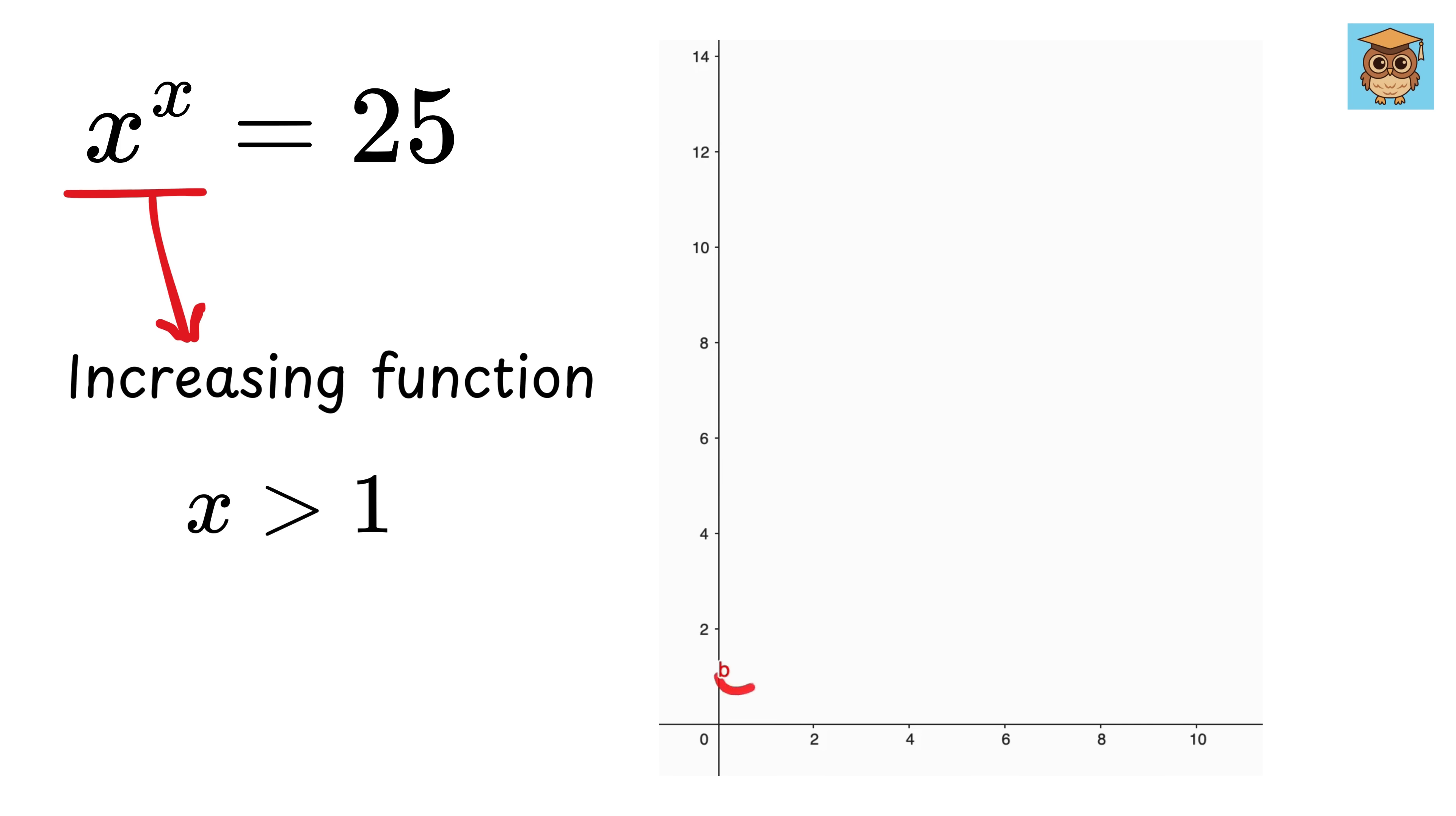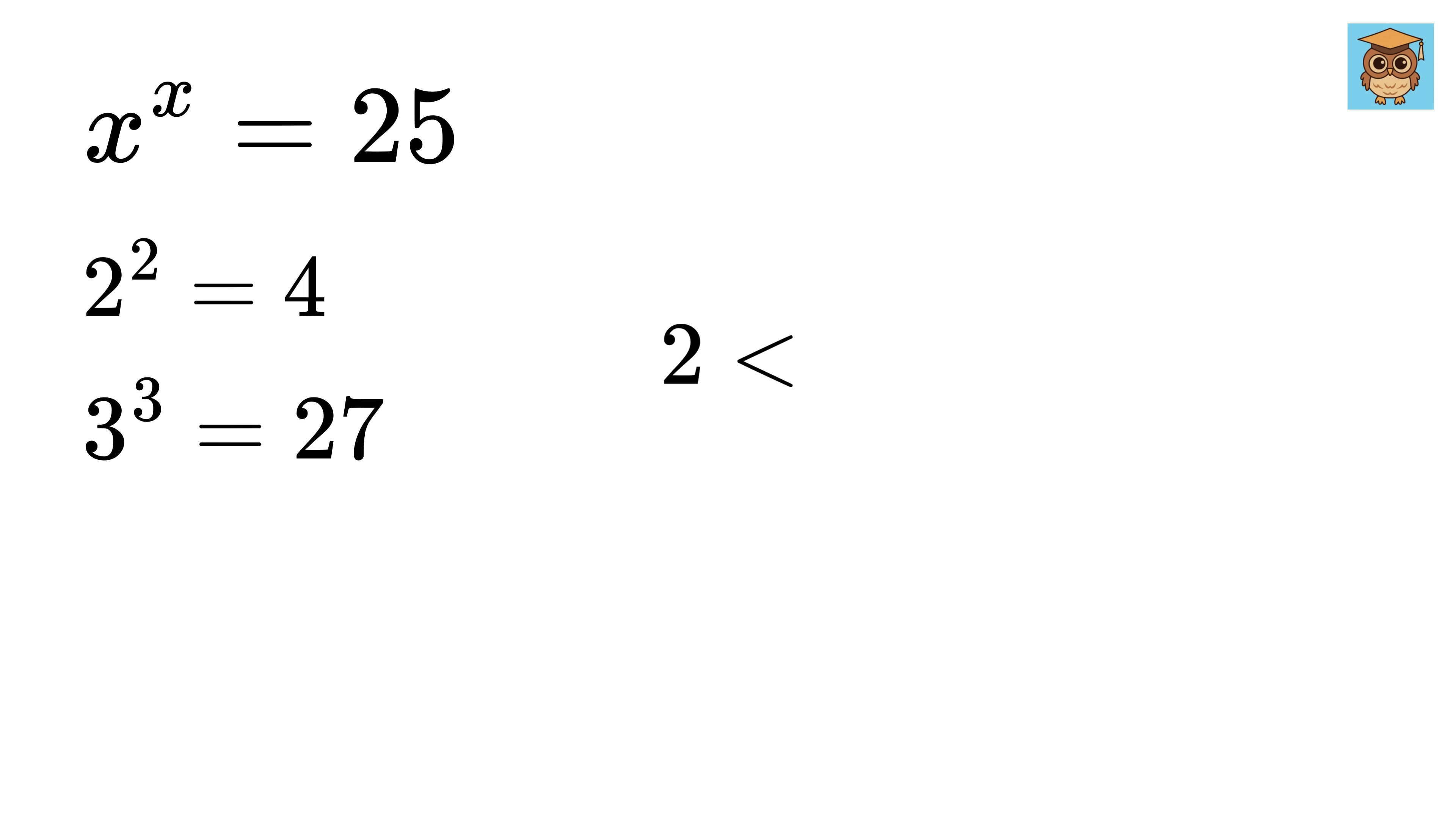First note that x to the x is an increasing function. Check its plot. Also we know that 2 raised to 2 is 4 and 3 raised to 3 is 27. So we can be sure that the value of x lies somewhere between 2 and 3.